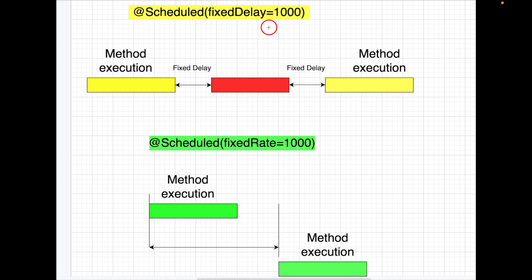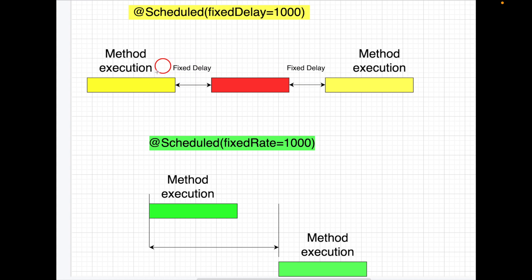With fixedDelay, the next method execution starts only after the previous execution is completed. Without completing the previous one, the next one won't start. So there is a fixed delay — we pass that time in milliseconds, for example 1000 milliseconds, which is one second.